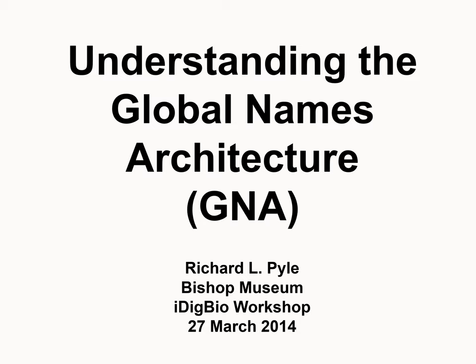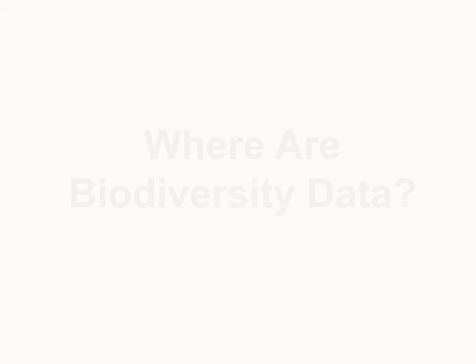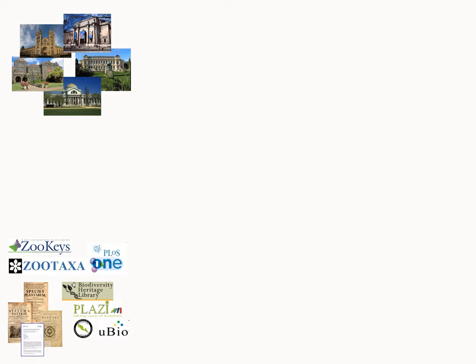To understand what the Global Names Architecture is, it's helpful to understand why there's a need for it. The first thing you have to ask is: where is the world's biodiversity data? Obviously we're at an iDigBio conference, and biodiversity data exists in natural history collections and museums. But it also exists in hundreds of years of historical literature, in organizations digitizing that literature, and in new literature born digital every day.